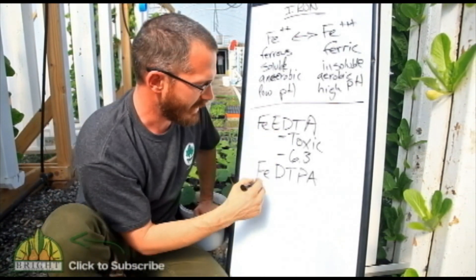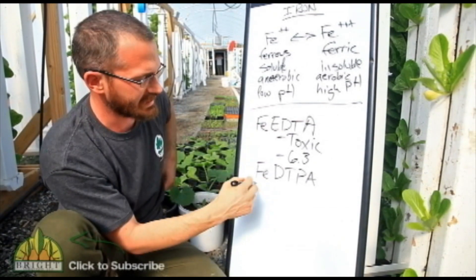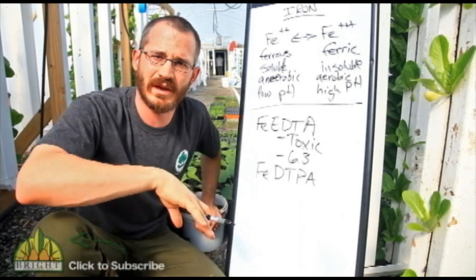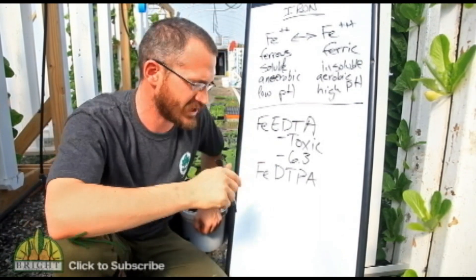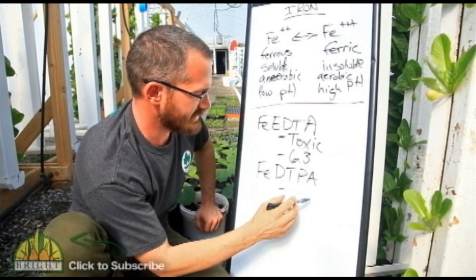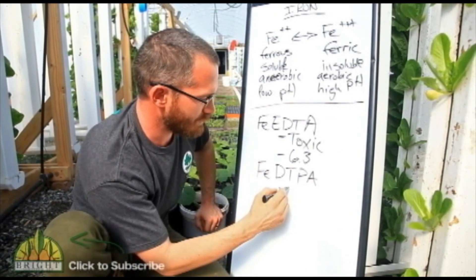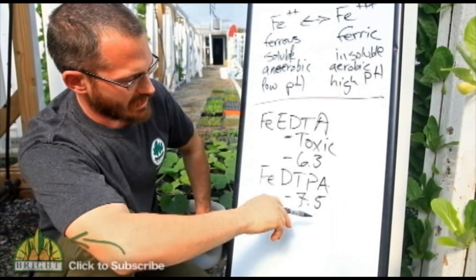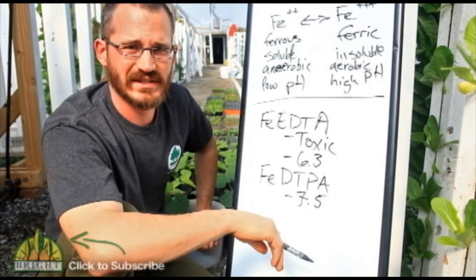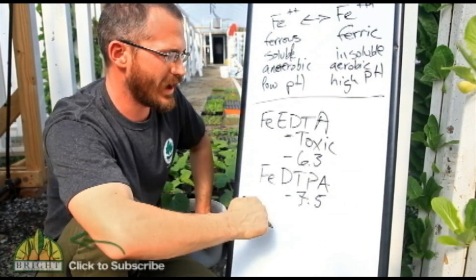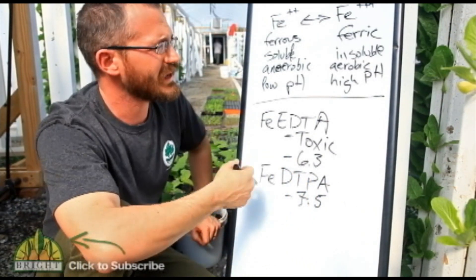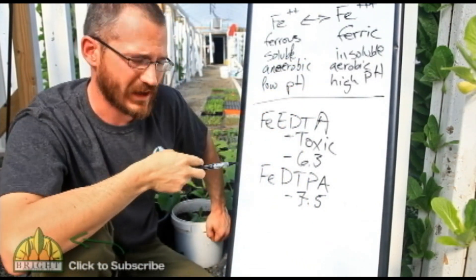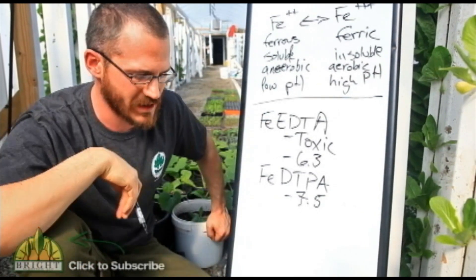Fe-DTPA is good stuff. I recommend it if your system typically runs at a lower pH. Fe-DTPA is effective up to a pH of about 7.5. Up until about 7.5, this works very well at binding iron and making it available even in aerobic conditions. Highly recommend it.